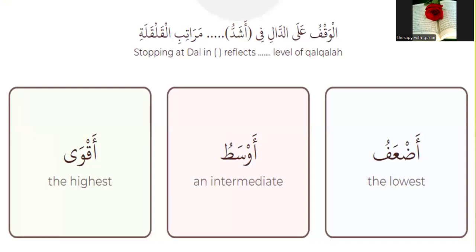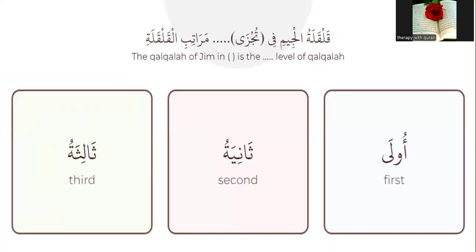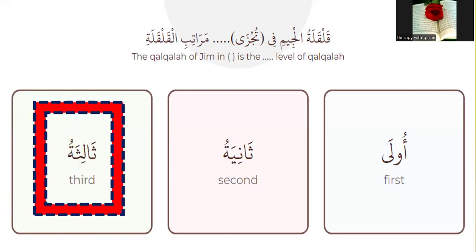Stopping at the letter Daal in Ahad — which level of qalqala? It's at the end and it has shadda, so it's the highest level. Yes, very good, the highest. Number four: the qalqala of Jeem in Tujizaa — the Jeem is in the middle and has sukoon, so it's the weak level. Yes, very good.